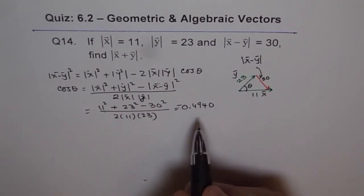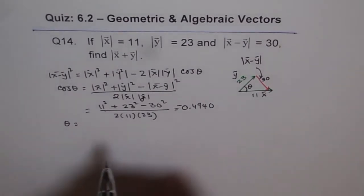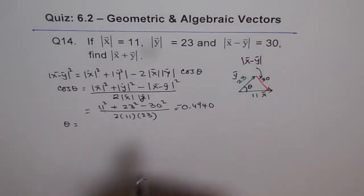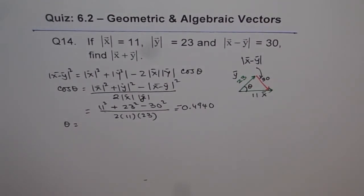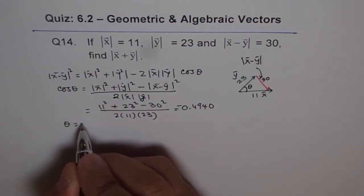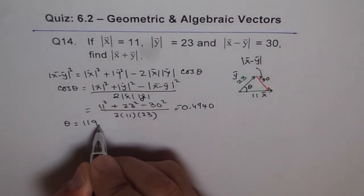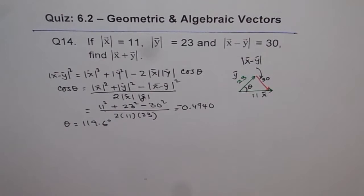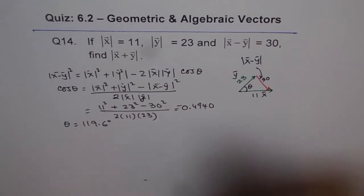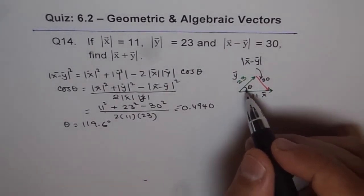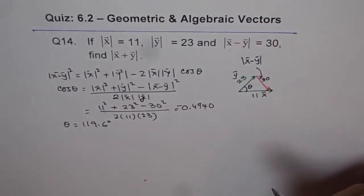Now we can find θ equals cos⁻¹ of that value. We'll do the inverse cosine of −0.4940 and get 119.6°. So θ equals 119.6 degrees. It doesn't look like it from the diagram, but that is what it is because I didn't draw it to scale.